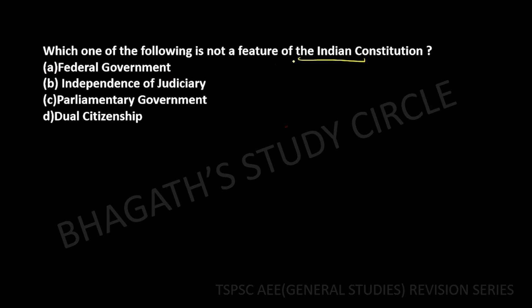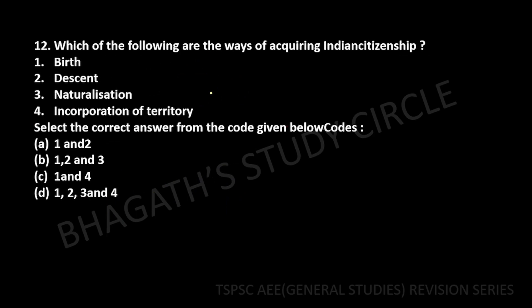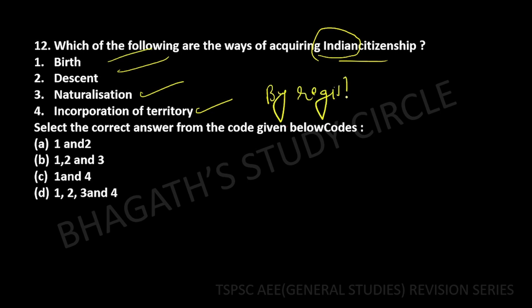Next question: Which one of the following is not a feature of Indian federalism? Options include: federal government, independent judiciary, and citizenship by registration. Citizenship can be acquired by birth, descent, naturalization, incorporation, or registration. Option 4 — registration — is the correct answer here.